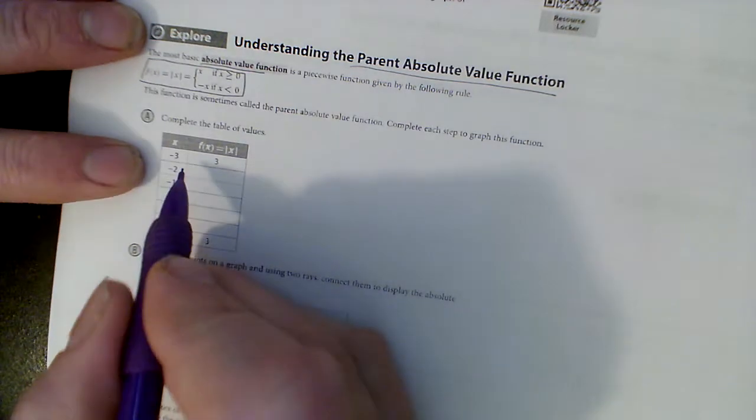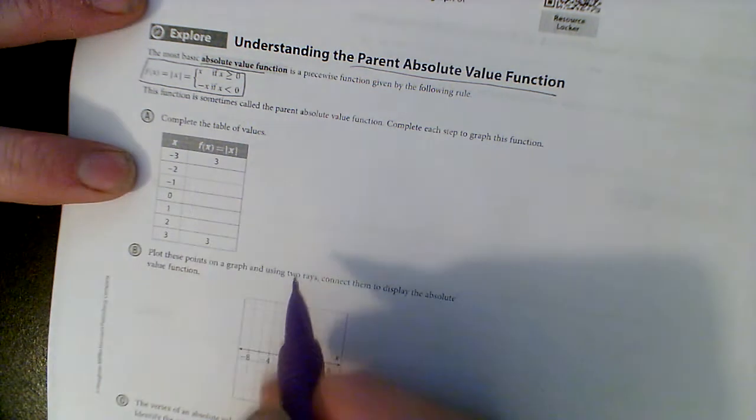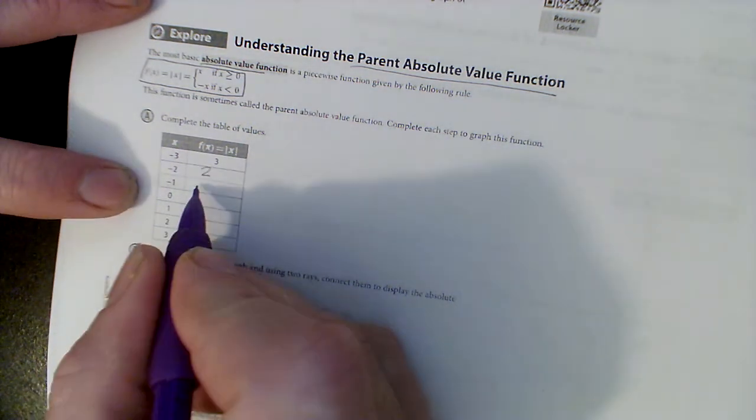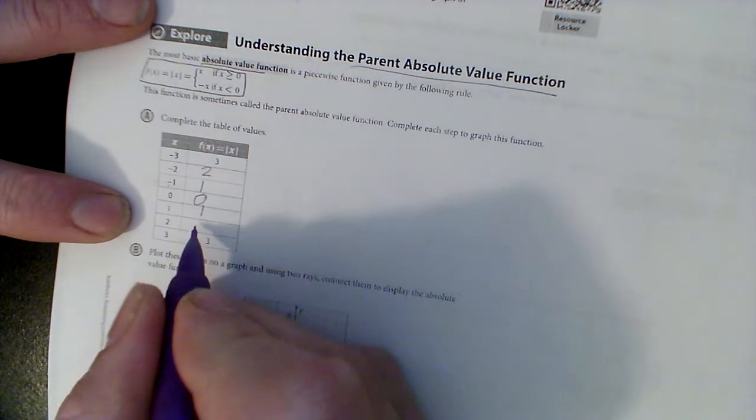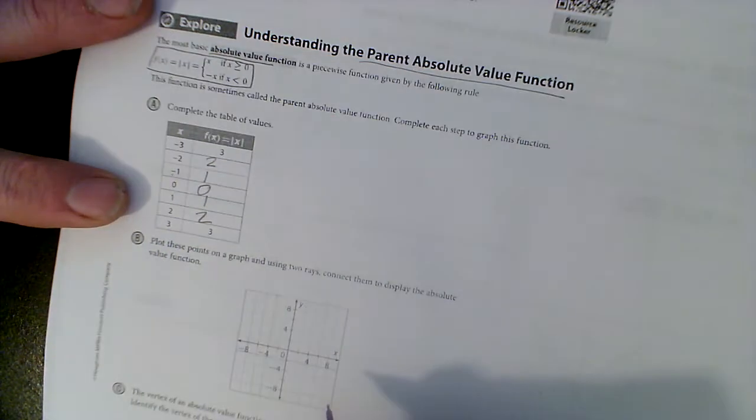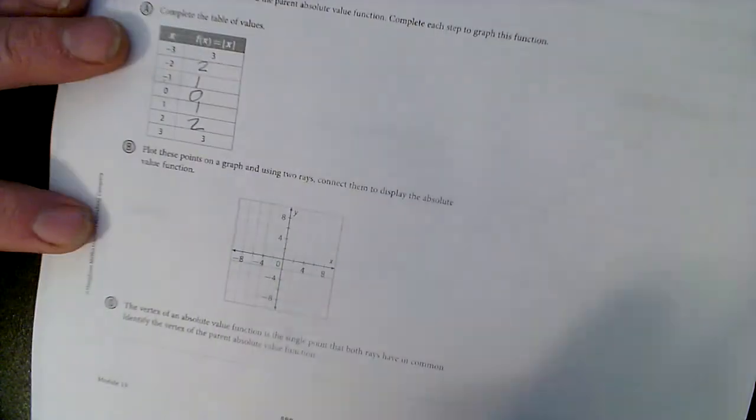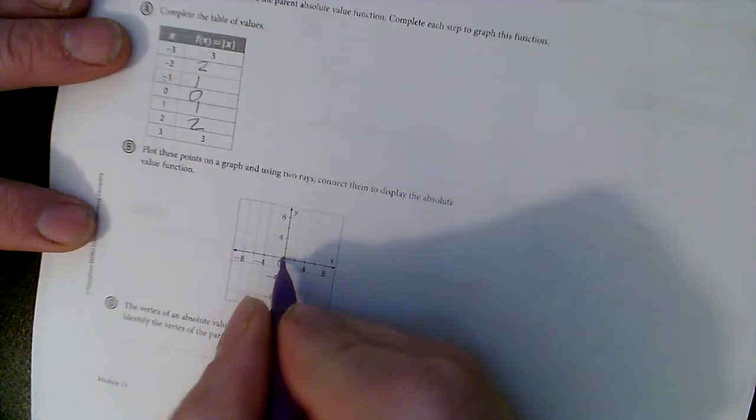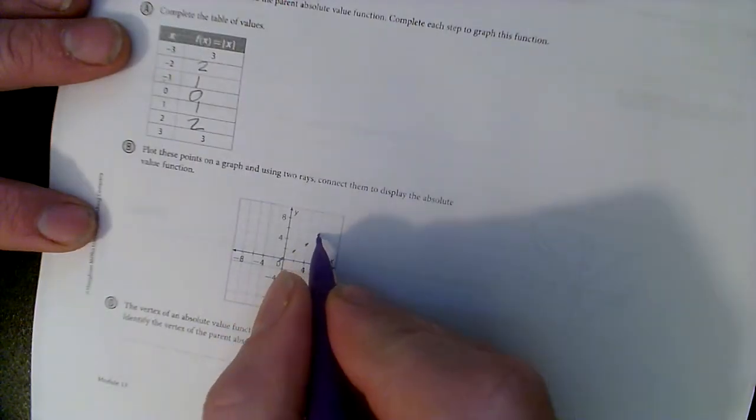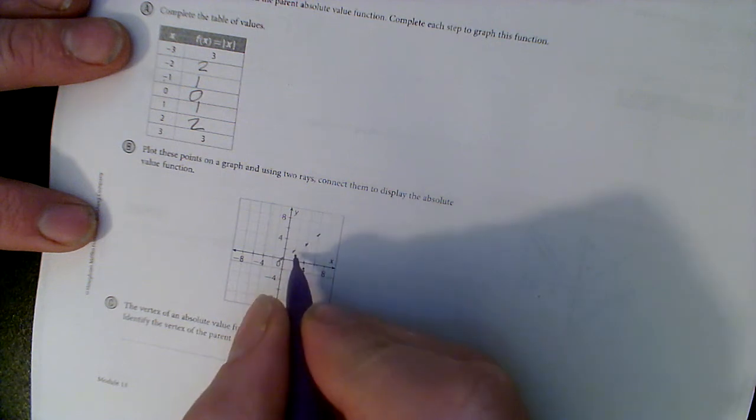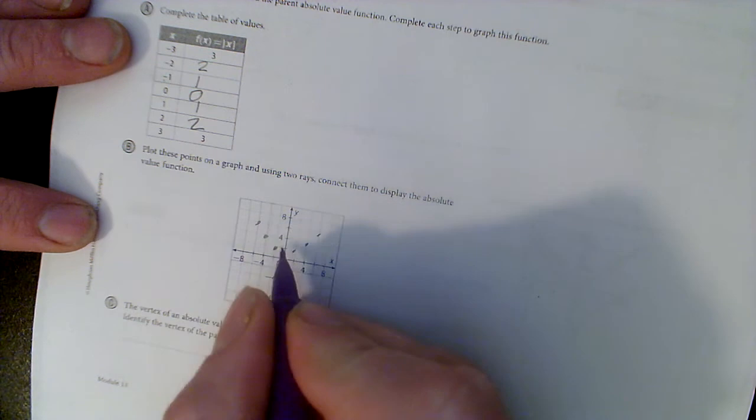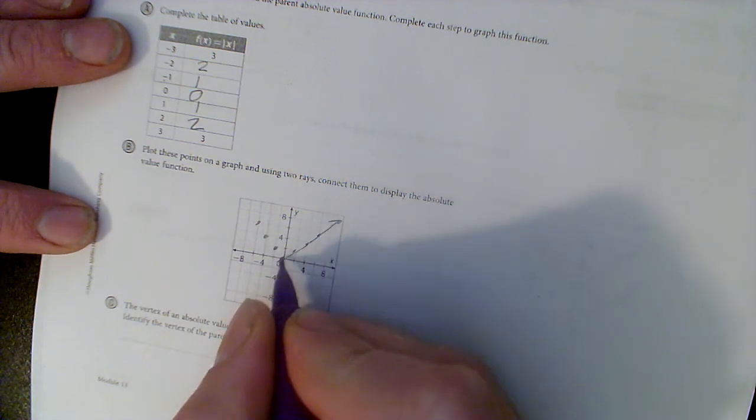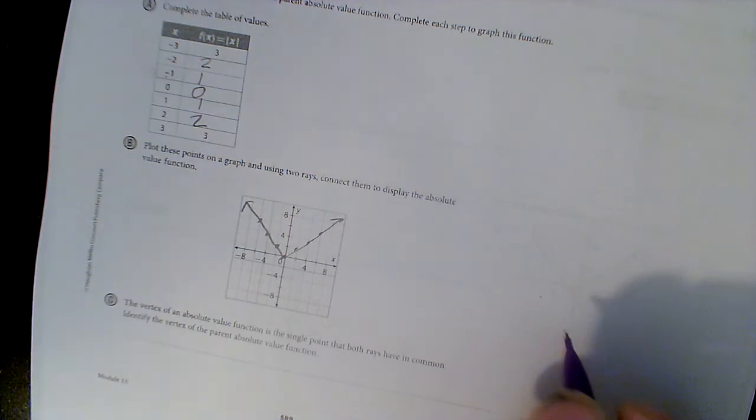Down here if I'm making a table, negative 3 turns into 3, negative 2 turns into 2, negative 1 turns into 1, and 0 stays the same. And on the other side, 1 stays 1, 2 stays 2. So we see an equation where if I plot those points, 0, 0, 1, 1, 2, 2, 3, 3, x and y are the same. But as I come down here, y is the opposite value of x. As I plug in negatives, y is positive. I'm going to go ahead and connect that. We can see the base function of an absolute value, a V-shaped graph.